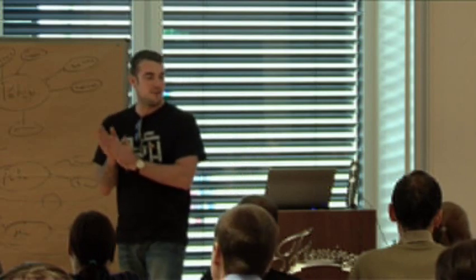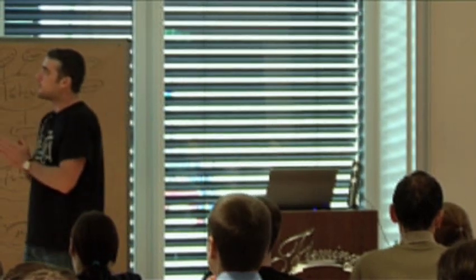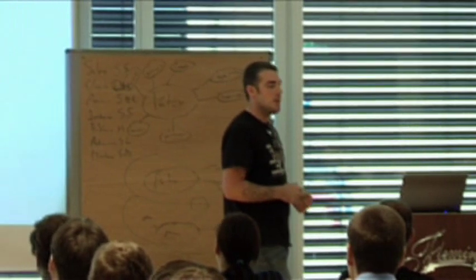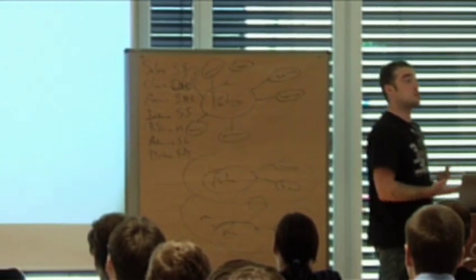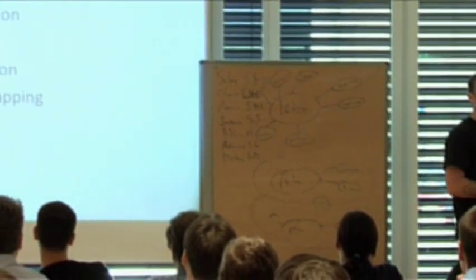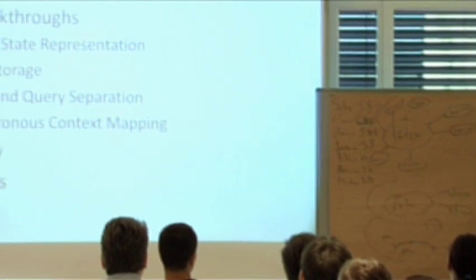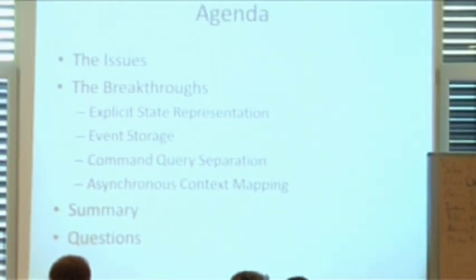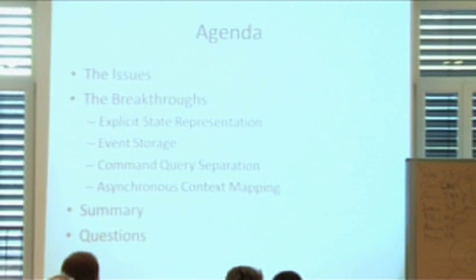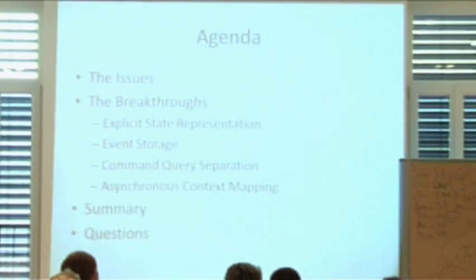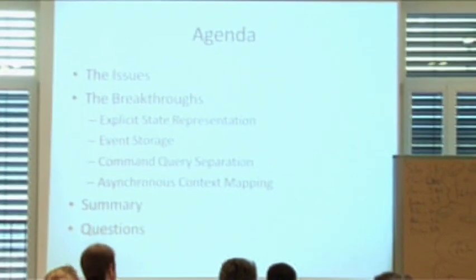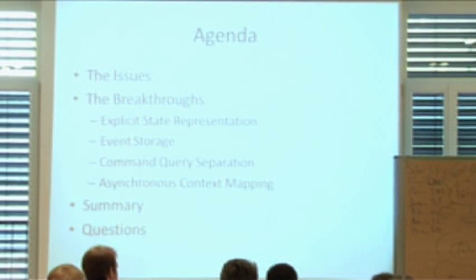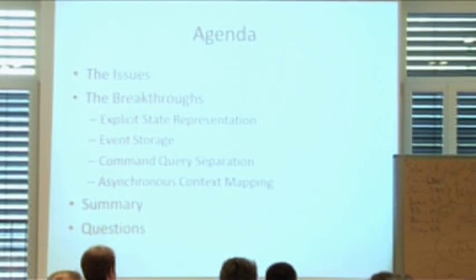We're going to start with some of the issues we found in this system, then go through a whole bunch of breakthroughs. The first one is explicit state representation — in other words, we're going to talk about events. We're going to talk about using events as a form of storage. How many people here use a database? I want you to put your hand down if you did not make a conscious, rational decision to use one.